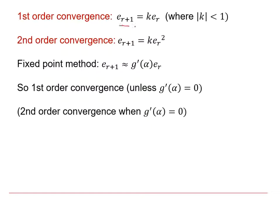we saw that the definition of first order convergence was where the error term was proportional to the previous error term, and the constant of proportionality k had to be smaller than one in magnitude. It can in fact be negative as long as it's between minus one and one.